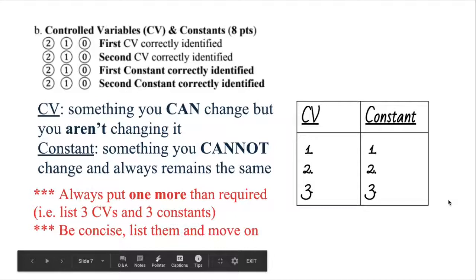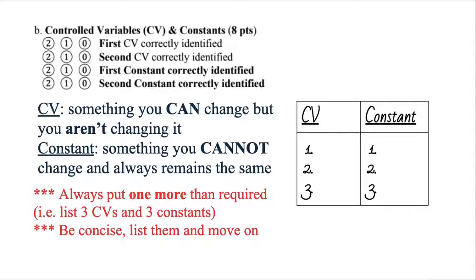And then moving on to controlled variables and constants. Here's something new, actually, they added on this year. They used to just be controlled variables or constants. But here's the difference between the two terms. Controlled variables is something that you can change, but you are not changing. For example, if you're testing pressure, and you want to keep the volume constant. You can change the volume, let's say, if you're using a balloon by blowing more air into it and increasing it, but you're choosing not to. So that's kind of a controlled variable, while a constant is like air pressure in the room. Like, you cannot change it, but it also always remains the same.